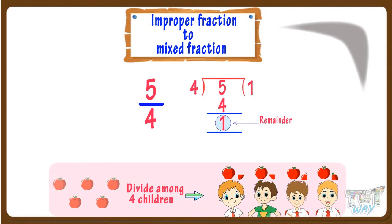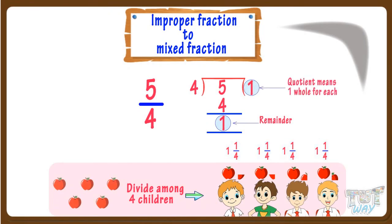And each child will get 1 fourth of that apple. So each child will get 1 whole apple and also a slice, which is 1 fourth of an apple. We write the share of each child like this. The quotient of 1 means 1 whole apple for each child — that is, each child will get 1 whole apple for sure.